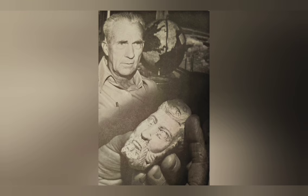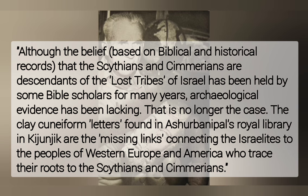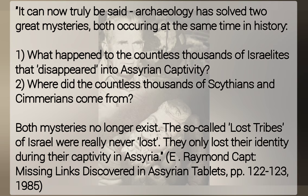Capt continued: "Although the belief — based upon biblical and historical records — that the Scythians and Cimmerians are descendants of the lost tribes of Israel has been held by some Bible scholars for many years, archaeological evidence had been lacking. That is no longer the case. The clay cuneiform letters found in Ashurbanipal's Royal Library in Kuyunjik are the missing links connecting the Israelites to the peoples of Western Europe and America, who trace their roots to the Scythians and Cimmerians. It can now truly be said archaeology has solved two great mysteries occurring at the same time in history: one, what happened to the countless thousands of Israelites that disappeared into Assyrian captivity? And two, where did the countless thousands of Scythians and Cimmerians come from? Both mysteries no longer exist. The so-called lost tribes of Israel were never really lost. They only lost their identity during their captivity in Assyria." — E. Raymond Capt, Missing Links Discovered in Assyrian Tablets.